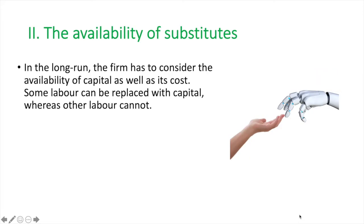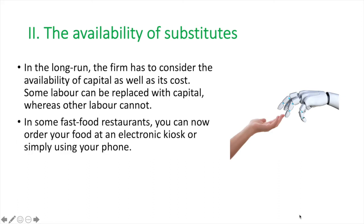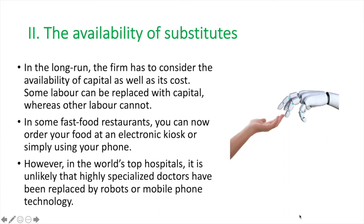Second is the availability of substitutes. In the long run the firm has to consider the availability of capital as well as its cost. Some labour can be replaced with capital whereas other labour cannot. For example, in some fast food restaurants you can now order your food at an electronic kiosk or simply order using your phone. However, in the world's top hospitals it is unlikely that highly specialized doctors have been replaced by robots or mobile phone technology.